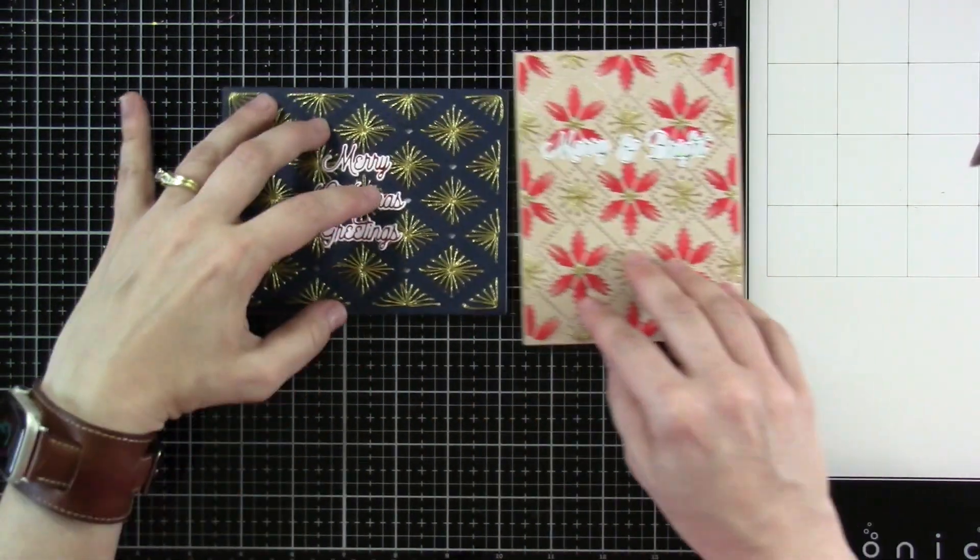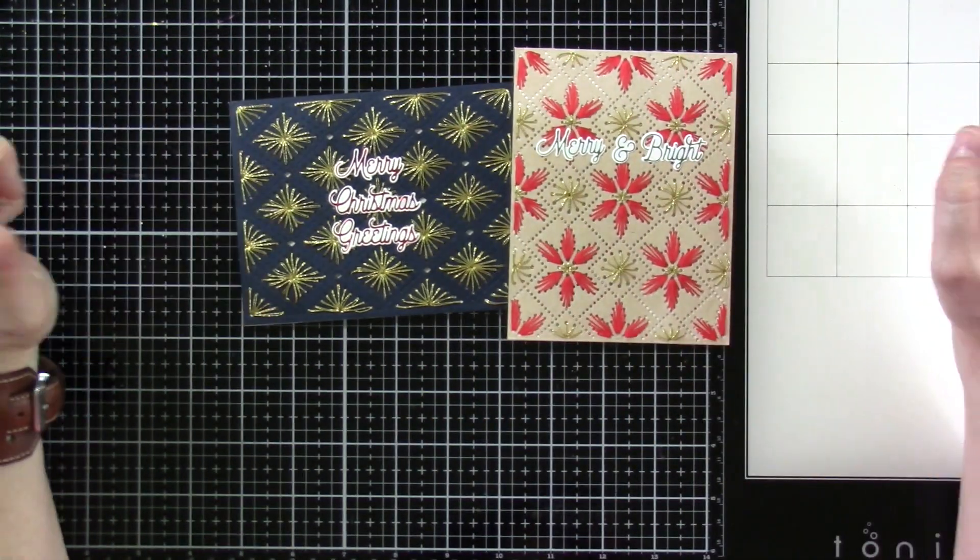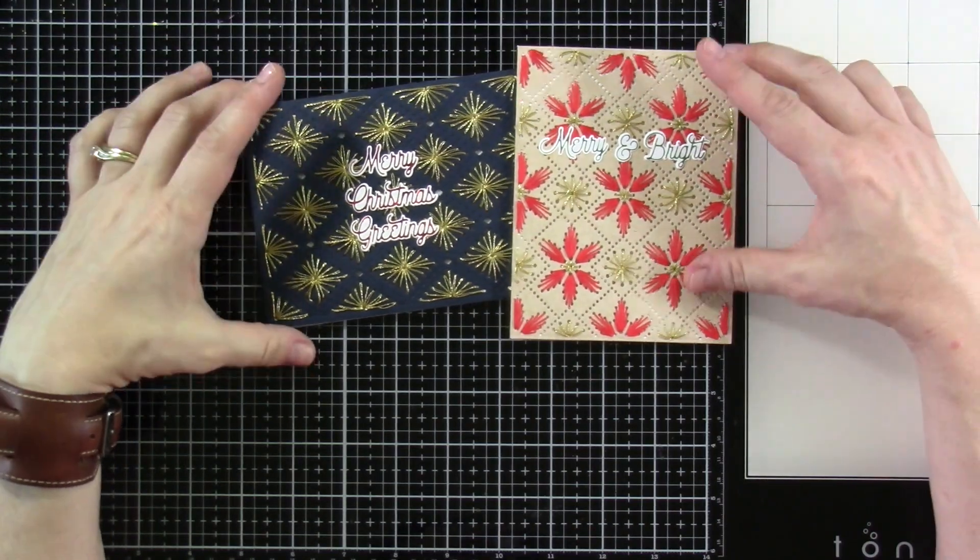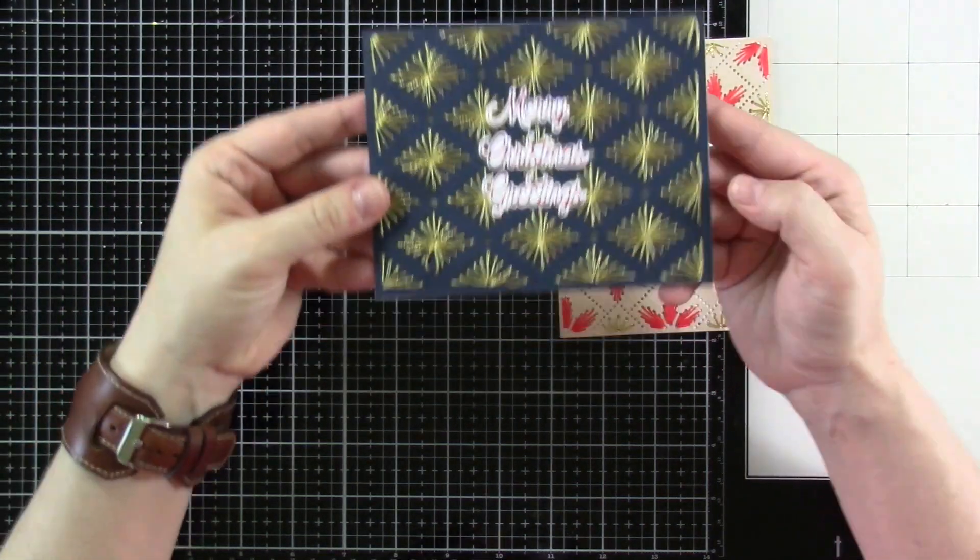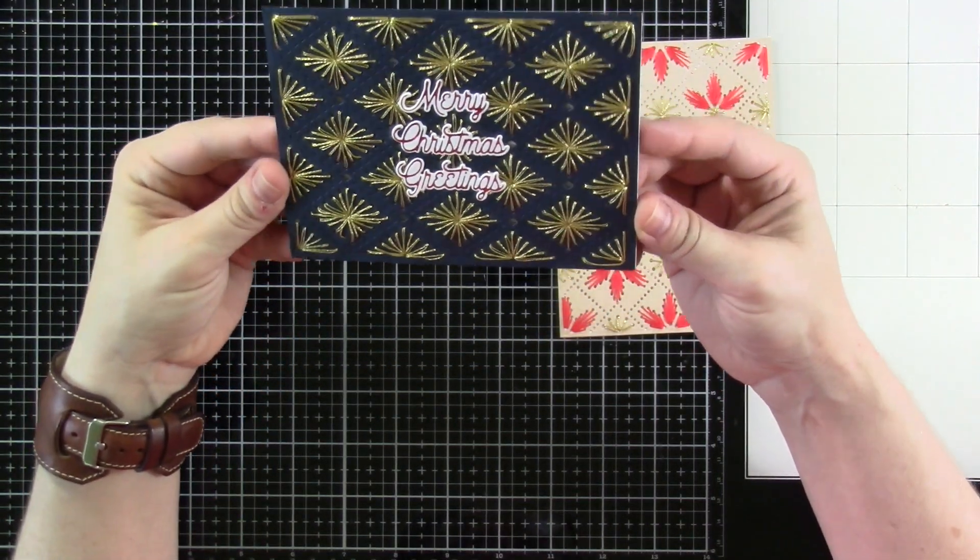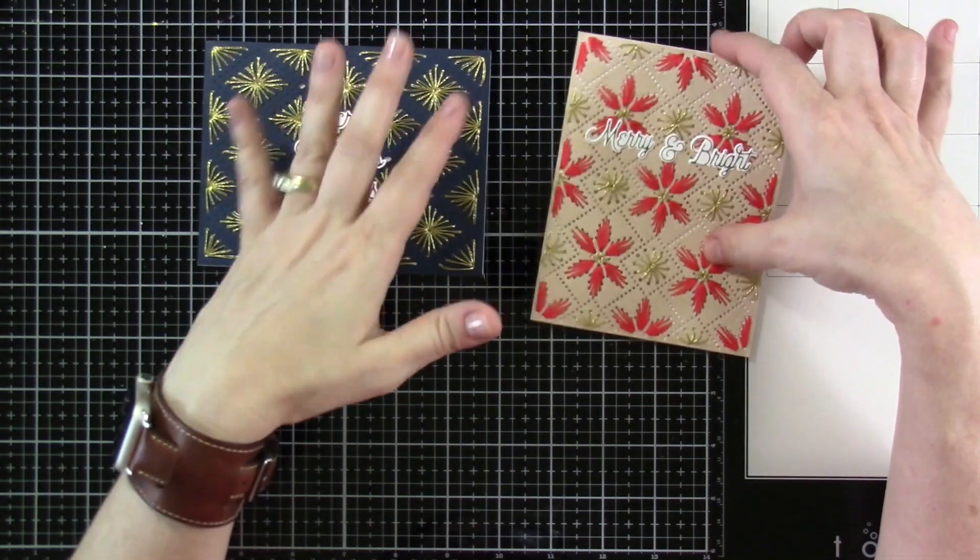And I have a couple of cards using the Stitchmas Christmas collection. This first one here is the Stitched Diamond Argyle, and I die-cut this out of some blue cardstock and then sat and stitched it with some gold thread. Oh my goodness, I just think that is so pretty.